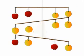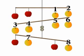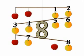And how many oranges are there? 1, 2, 3, 4, 5, 6, 7, 8. There are 8 oranges.